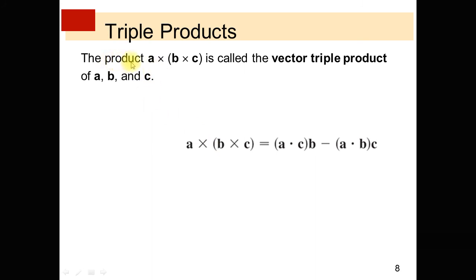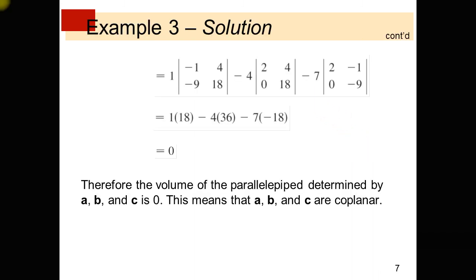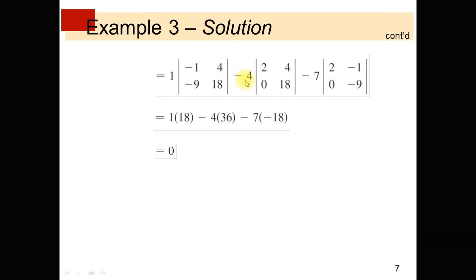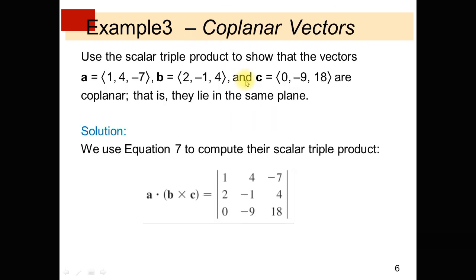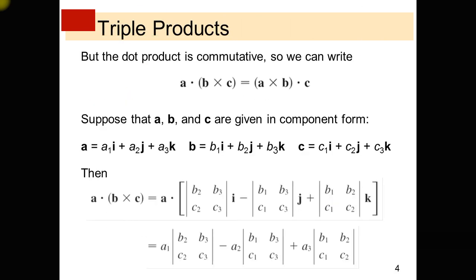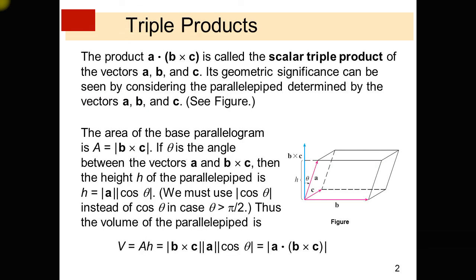The product A cross (B cross C) is called the vector triple product of vectors A, B, and C. A cross (B cross C) equals (A dot C) times B minus (A dot B) times C. Dear students, in this lecture some important points should be noted.